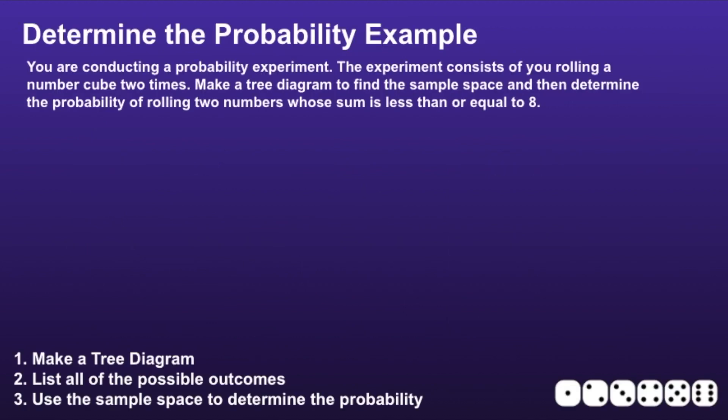Now let's determine the probability. You are conducting a probability experiment. The experiment consists of rolling a number cube two times. Make a tree diagram to find the sample space, and then determine the probability of rolling two numbers whose sum is less than or equal to eight.